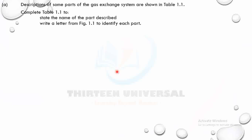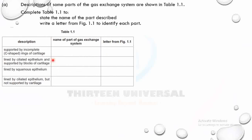There are descriptions of some parts of the gas exchange system in table 1.1. Complete the table by stating the name of the part described and writing the letter from figure 1.1 to identify each part. The first description says 'supported by incomplete C-shaped rings of cartilage' — which part has C-shaped rings? Pause the video.